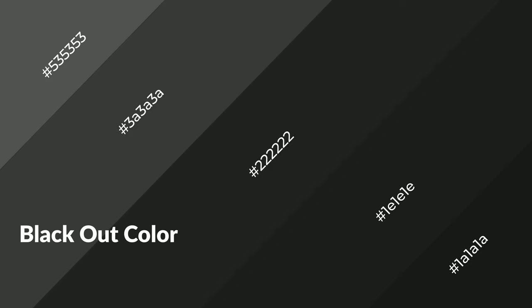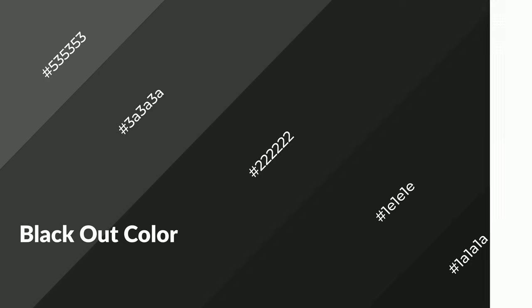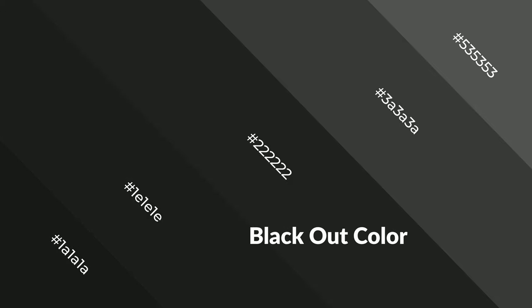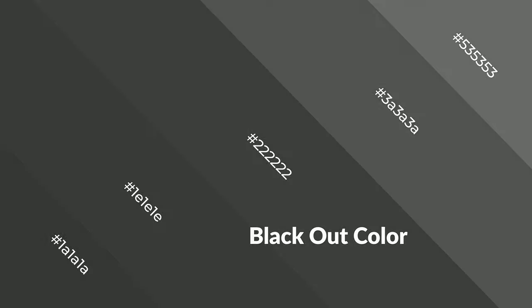Blackout is a warm color and it emits cozier and active emotions. Warm colors are symbols of warmth, fire, heat, and sunshine. It also evokes joy, passion, love, and even anger. You can see them used in restaurants and gyms.